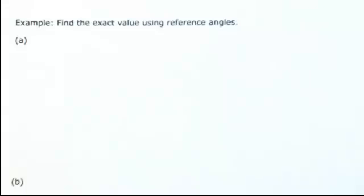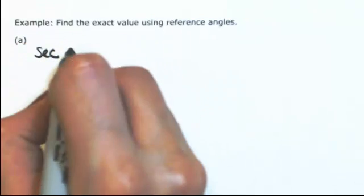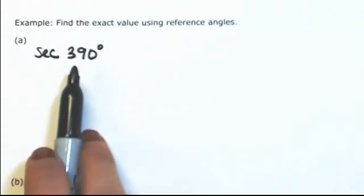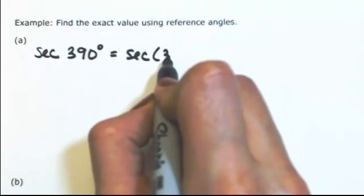Let's do some examples that combine reference angles with coterminal angles. For example, let's say I want to find the secant of 390 degrees. Since 390 degrees is more than 360, we can use its coterminal angle by taking away 360.